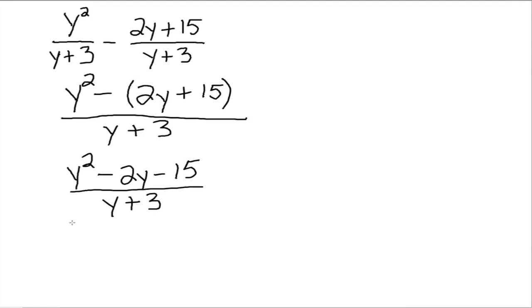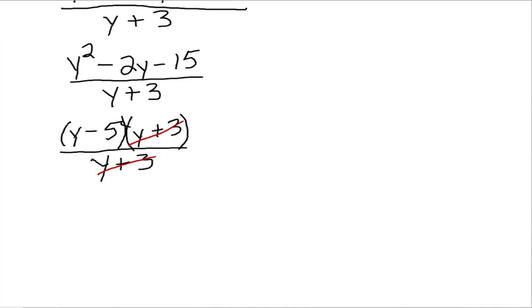Then look to factor your y squared minus 2y minus 15. So this factors into y minus 5 and y plus 3. And then we can divide out the common y plus 3s. So we can say you're gone, you're gone. And you're just left with y minus 5.